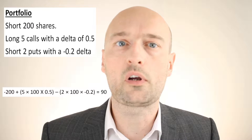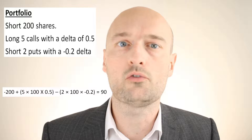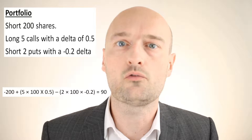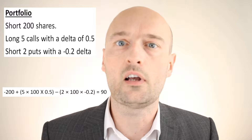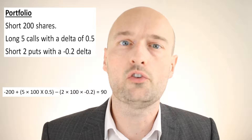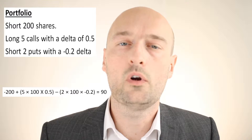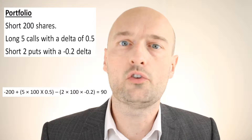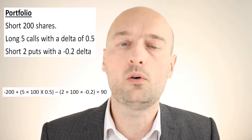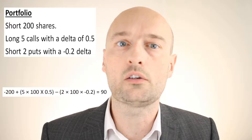To calculate that: minus 200 because the underlying has a Delta of 1, so being short 200 shares gives you a Delta of minus 200. Then plus five times 100 — because each option covers 100 shares — times the Delta of the call option which was 0.5. Then minus two times 100 times minus 0.2 for the two short put options, with a multiplier of 100 and a Delta of minus 0.2. Summing that all up gives 90, so owning that portfolio gives you a risk exposure as if you were long 90 shares of the underlying. For small moves in the underlying you'd expect your P&L to change as if you were long 90 shares.